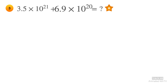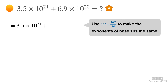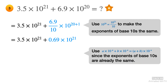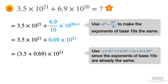The first step is to make the exponents of 10 the same. The smaller number is 6.9 times 10 to the 20th power, so you have to tweak it so that the exponent of 10 is 21. When you increase the exponent of 10 by 1, you also have to divide 6.9 by 10. Now you can add 3.5 and 0.69 because the scientific notations have the same power of 10. The final answer is 4.19 times 10 to the 21st power.